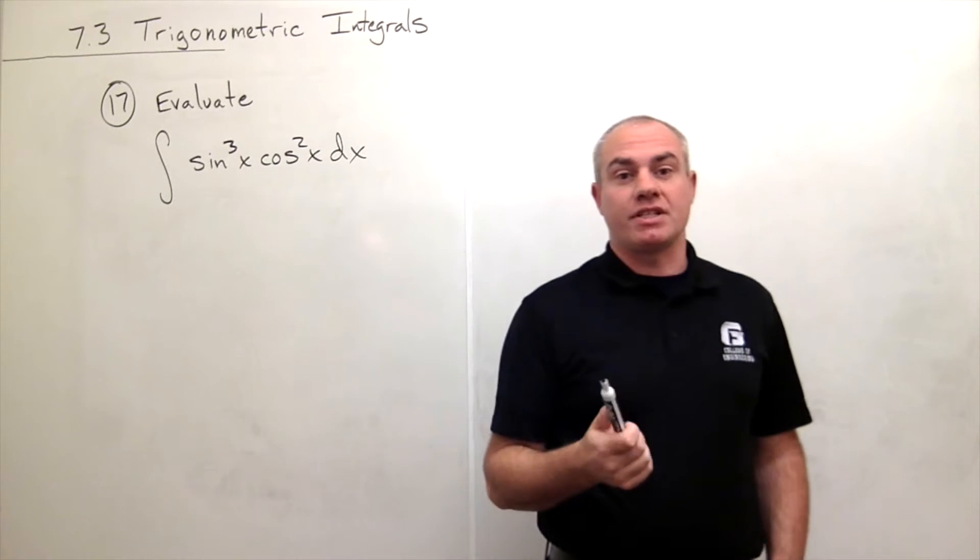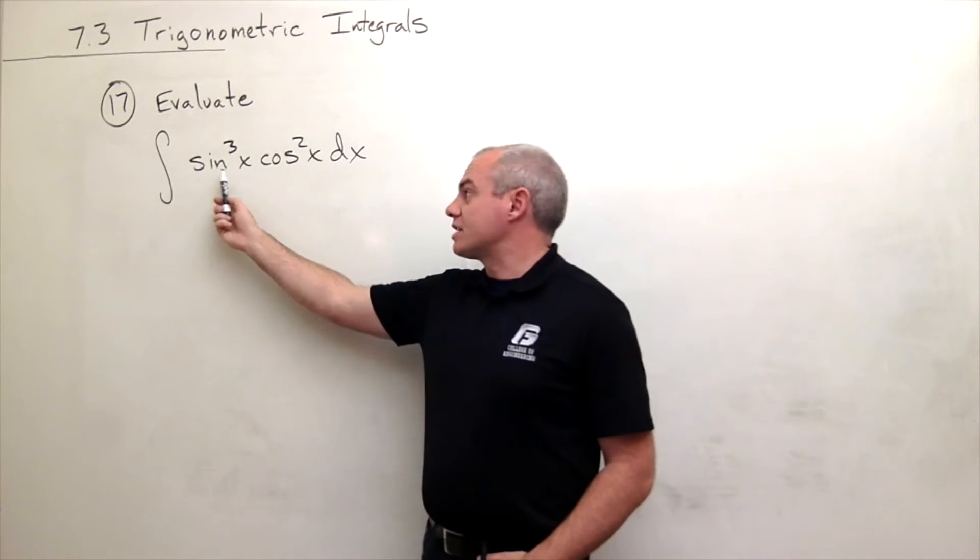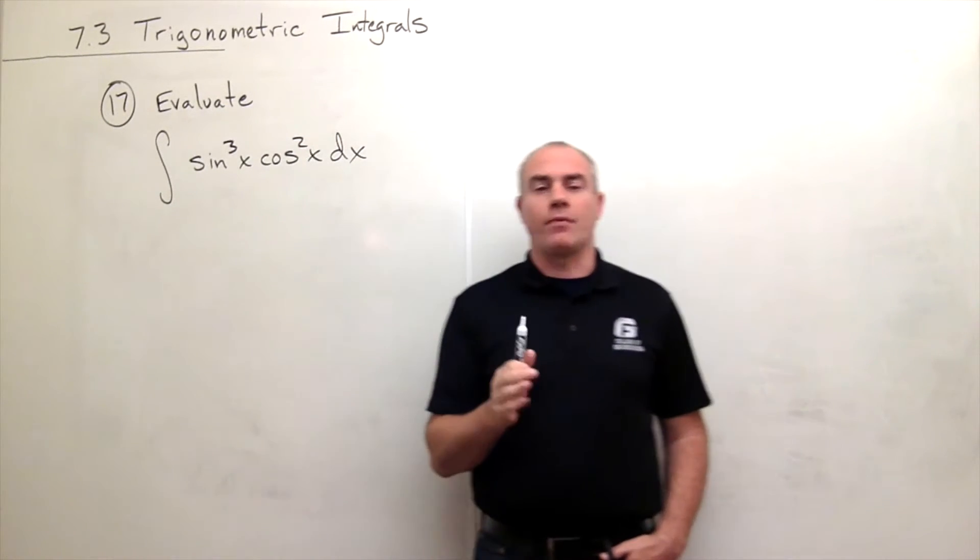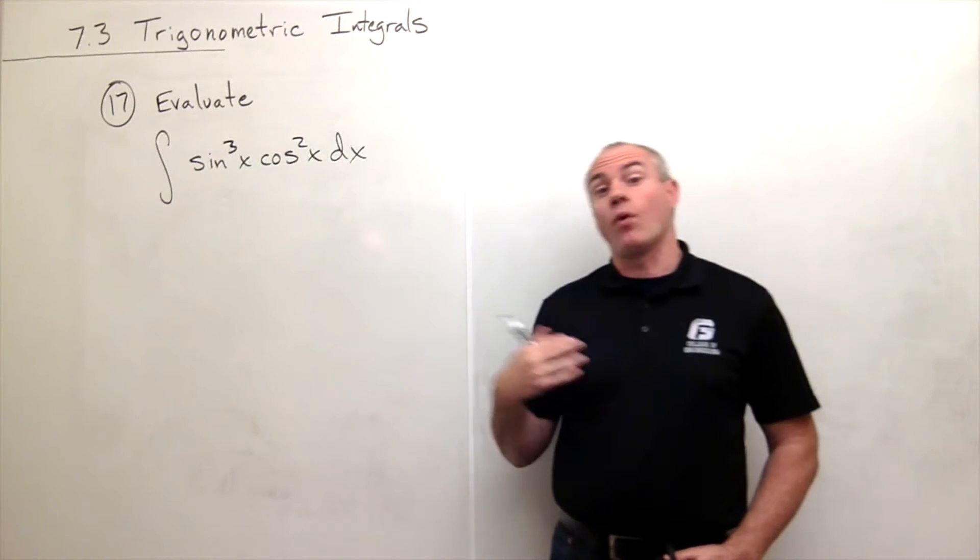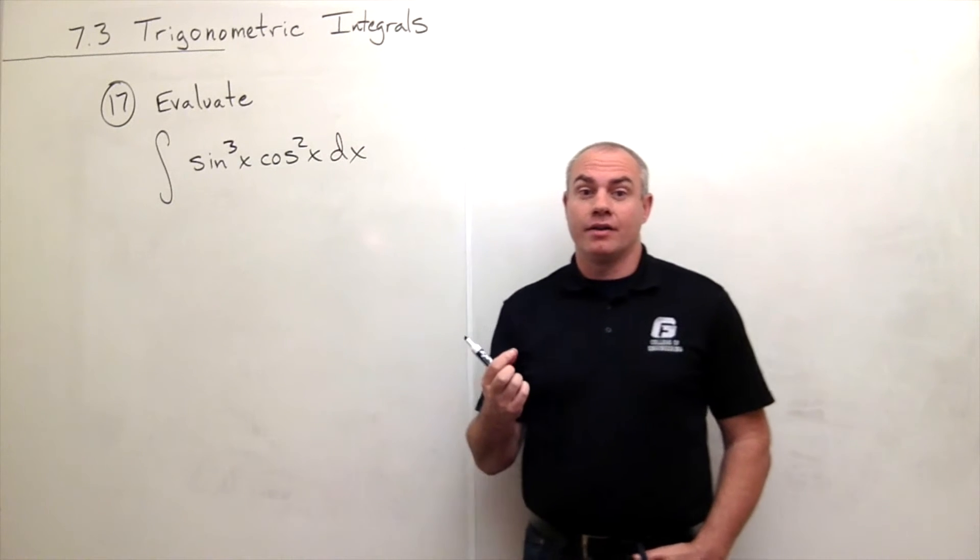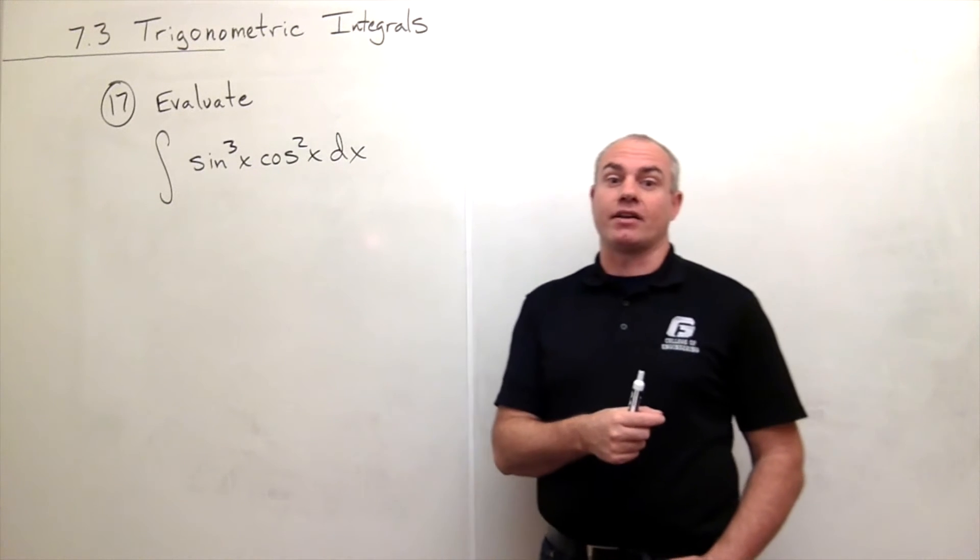In problem number 17 we have an integral with sine of x to a power and cosine of x to a power. The first thing I want to look for is are there any powers of sine of x or of cosine of x that are odd? If there are then I do one thing, and if there are not then I use half angle identities.